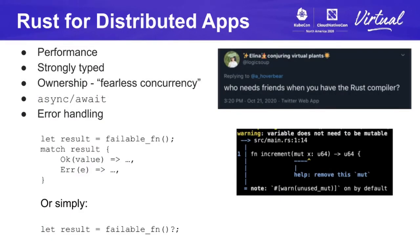I'd like to spend some time discussing why I think Rust is a great language for developing distributed applications like Kubelet. First, Rust can produce very high performance software and frequently matches C++ in performance benchmarks. In part, this is achieved by a policy of zero-cost abstractions, wherein abstract programming features like generic types incur zero runtime cost. The result of this focus on performance is not only the ability to scale, but also efficiency, which can have a big impact in the data center and at the edge.